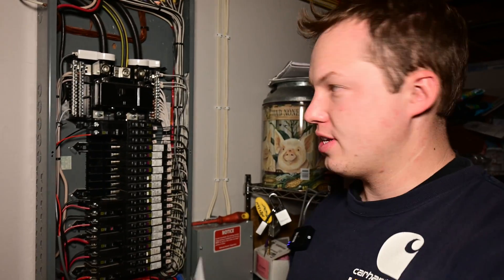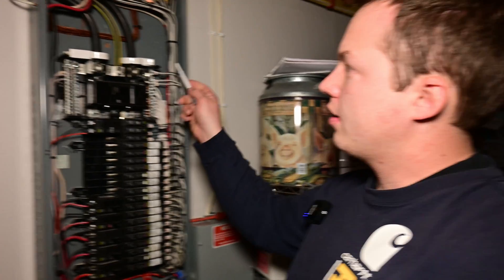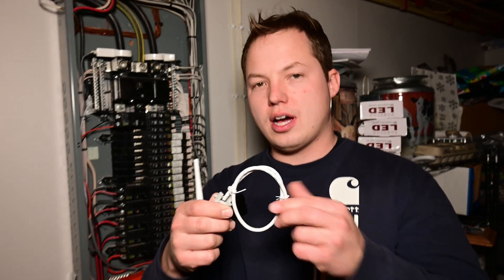So we have two of the three connections made on the sense energy monitor. We have our power feeding from our double-pole breaker, and then we have our two clamps that are actually going to monitor the amperage that is flowing through those wires. The last thing we need to connect is our antenna.